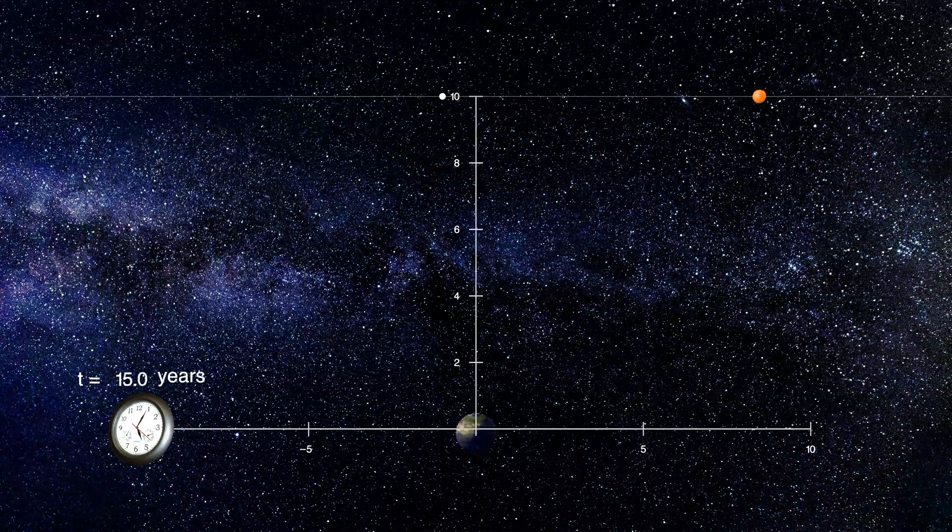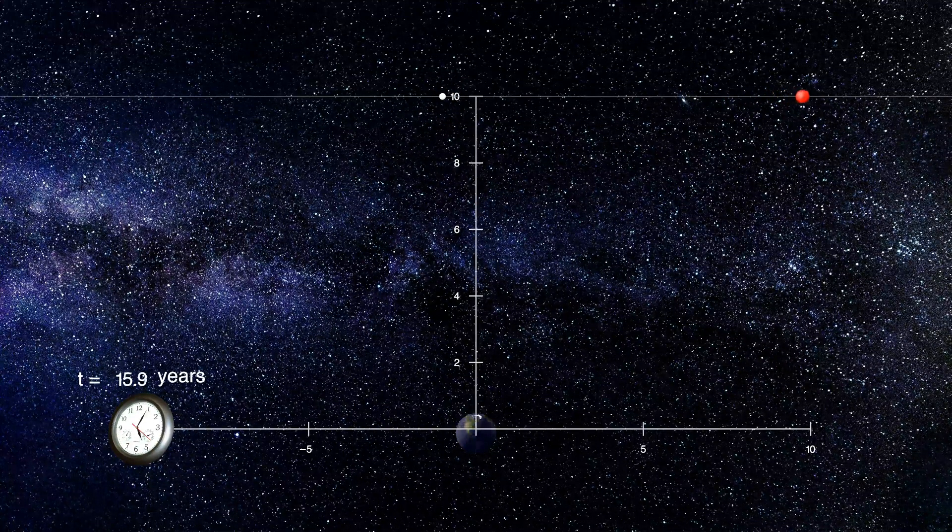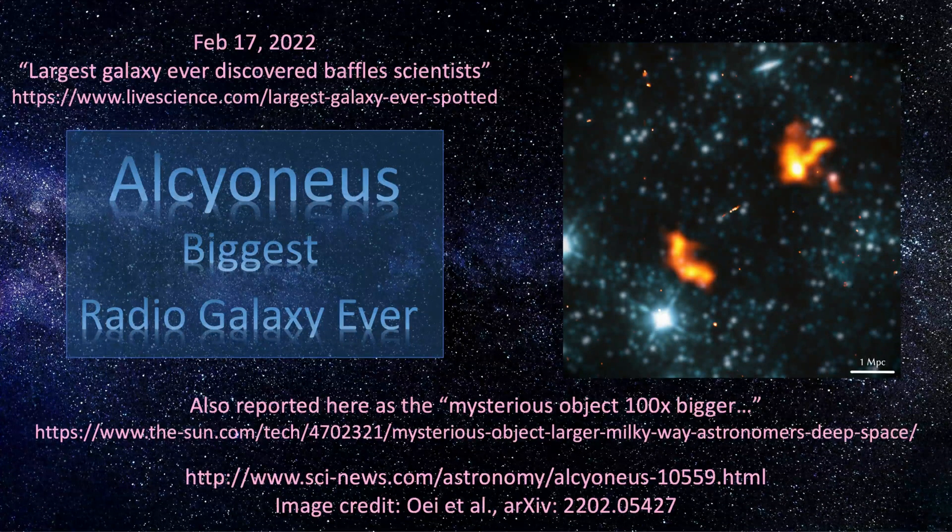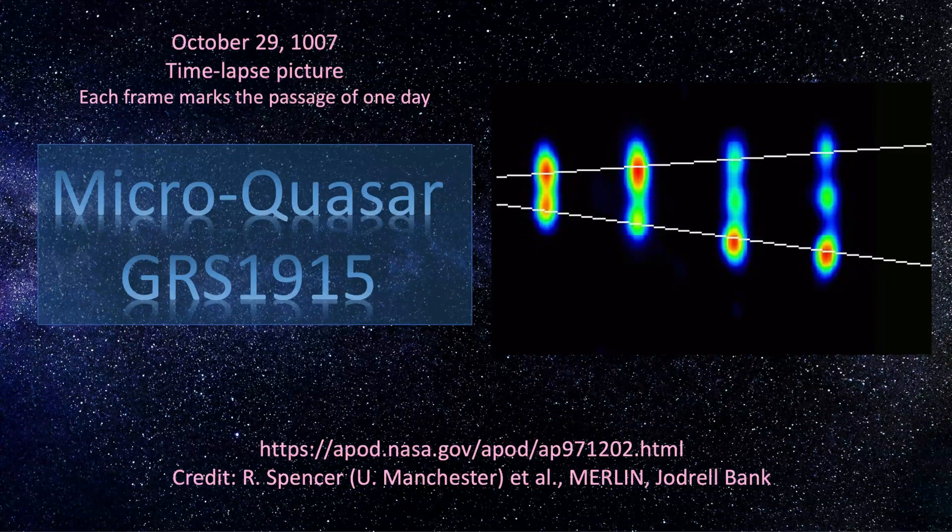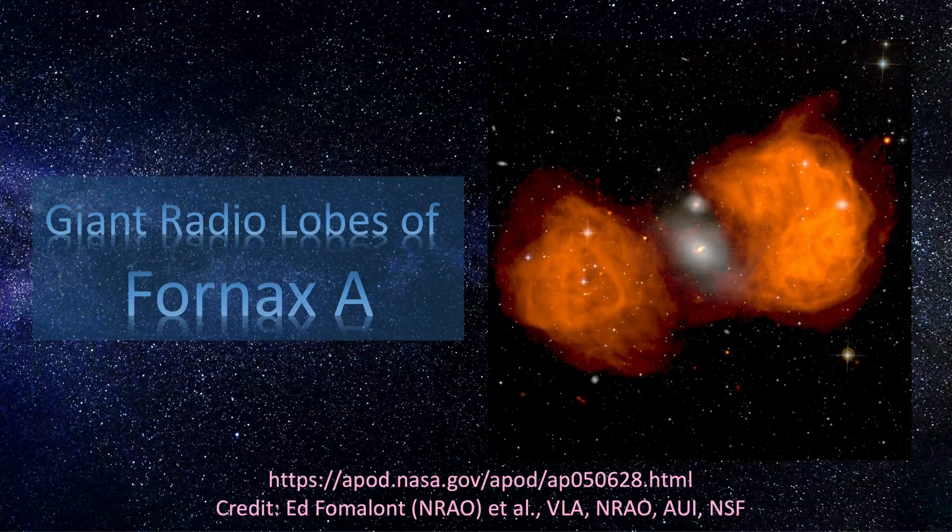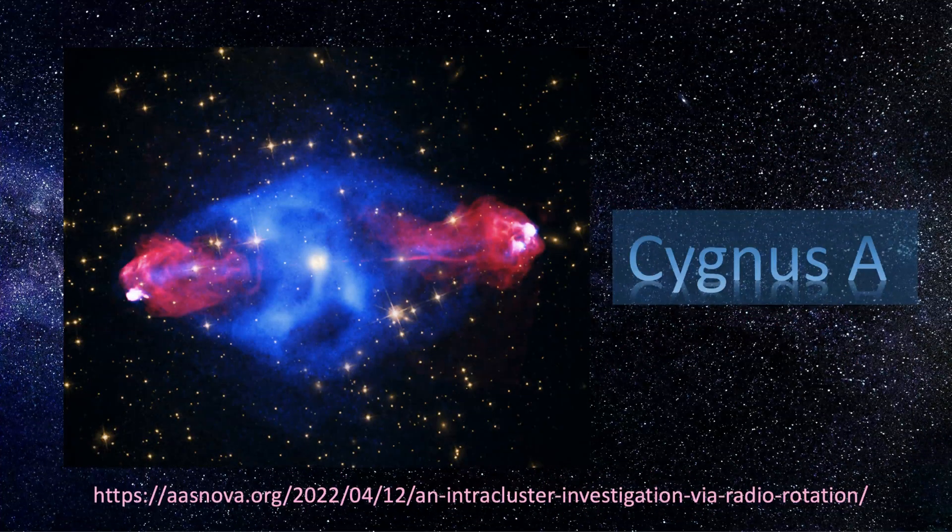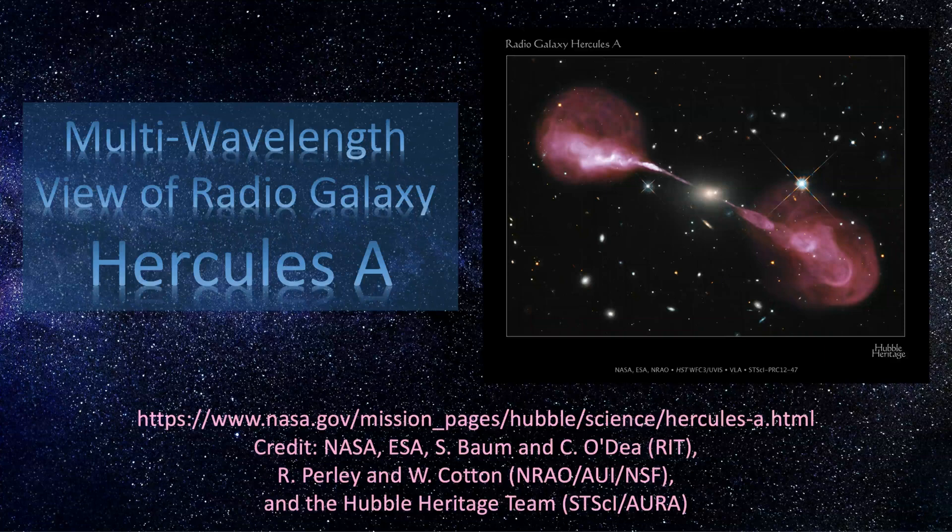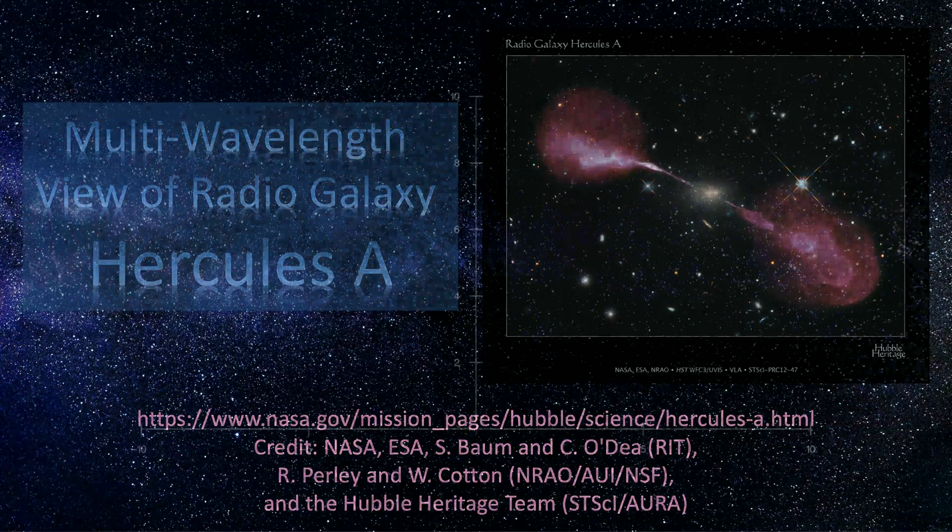Now the question is are there such rotationally symmetric objects in the cosmos? There are. They are the radio lobes associated with the so-called active galactic nuclei or AGN. Their common features are a core region thought to be a host galaxy and a pair of much larger roughly symmetric lobes that appear when viewed in the radio frequency ranges.